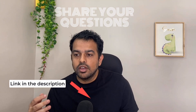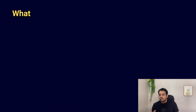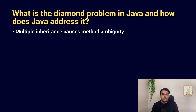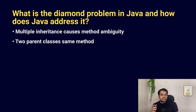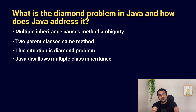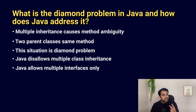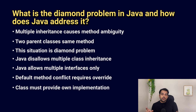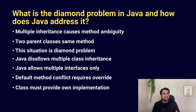The first question is: what is the diamond problem in Java and how does Java address it? Java does not support multiple inheritance with classes because it creates ambiguity when two parent classes have the same method — this situation is called the diamond problem. Java avoids this by allowing multiple inheritance only through interfaces. If two interfaces have the same default method, the implementing class must override it, forcing you to provide your own implementation.